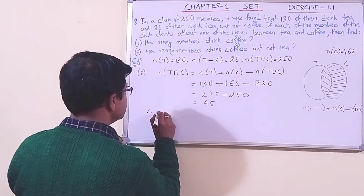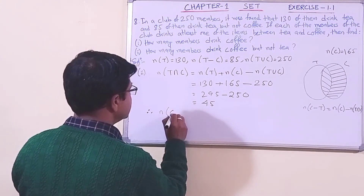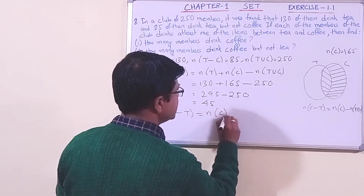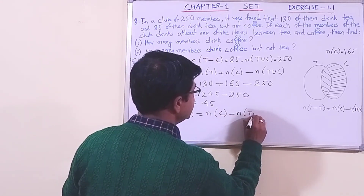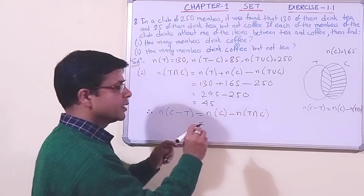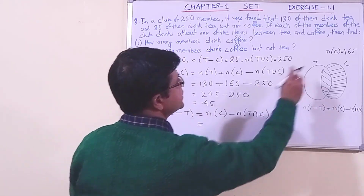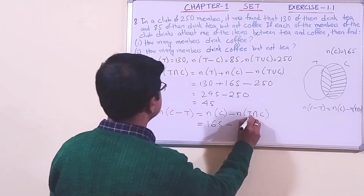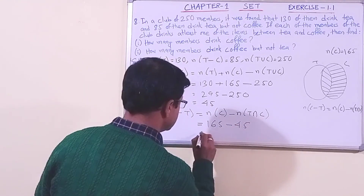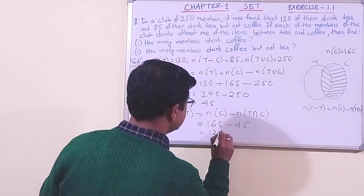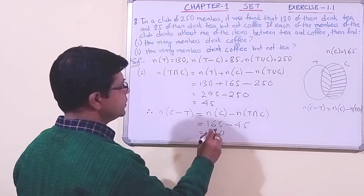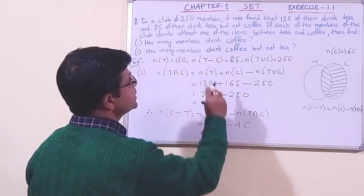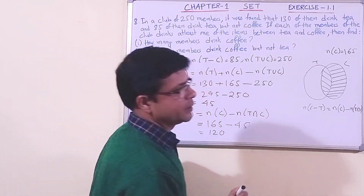Therefore, n(C - T) = n(C) - n(T ∩ C). We have already found n(C) = 165 and n(T ∩ C) = 45. So n(C - T) = 165 - 45 = 120. Therefore there are 120 members who drink coffee but not tea.